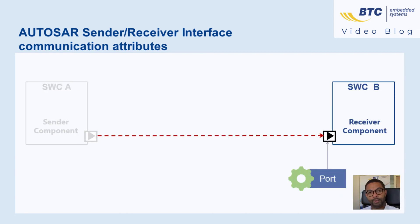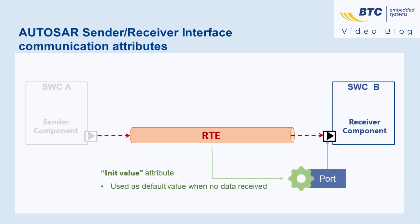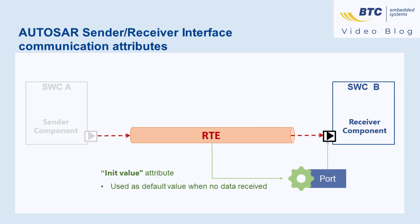What about the receiver components? In case a receiver component is executed before the sender, we need to make sure it always accesses a determined value. Therefore, this value can be specified with the attribute init value. If a receiver component needs to process data only when it has changed, it can enable the attribute called update flag. This will tell the component whether the data has been updated or not since the last read.